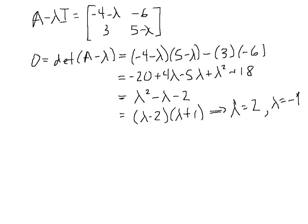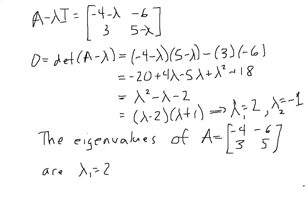And it's customary to subscript the eigenvalues somehow so that we can tell one from the other. So I'll just call this lambda sub 1 and lambda sub 2. So what we found out then is that the eigenvalues of A equals negative 4, negative 6, 3, 5 are lambda 1 equals 2 and lambda 2 equals negative 1. So in the next video, what we'll do is we'll pick up here, we'll take those two eigenvalues and find out how to obtain the eigenvectors that correspond to them or the eigenspaces.